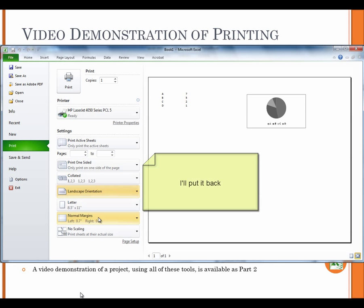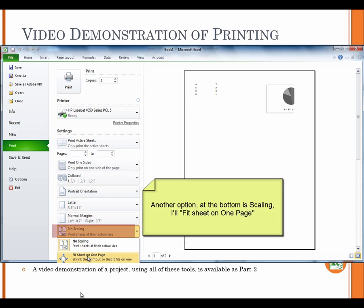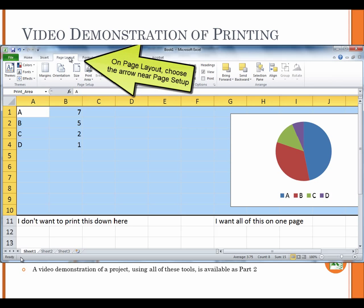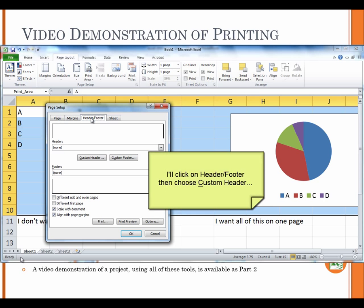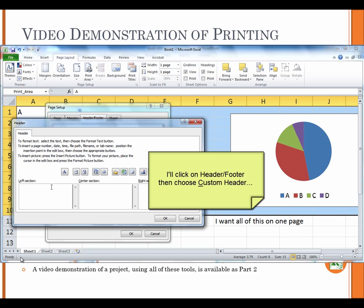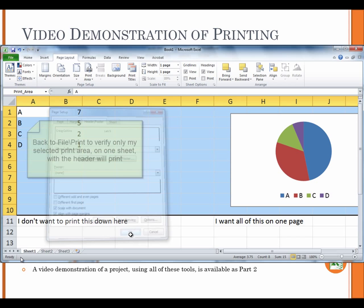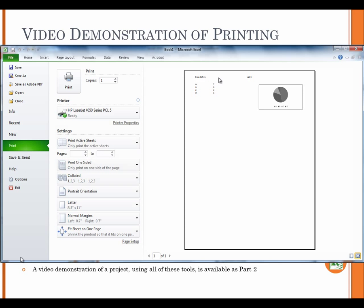One option: Landscape. I'll put it back. Another option at the bottom is scaling. I'll fit sheet on one page. I'd like to add some info at the top of the printed page, but not in the table. I need to add a header, similar to headers in Word. On page layout, choose the arrow near page setup. I'll click on header footer. Then choose custom header. Back to file print to verify only my selected print area on one sheet with the header will print.